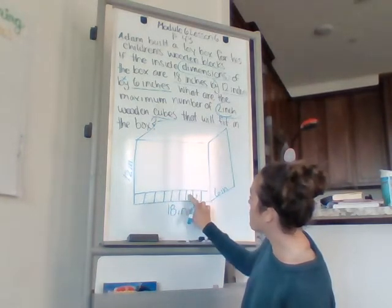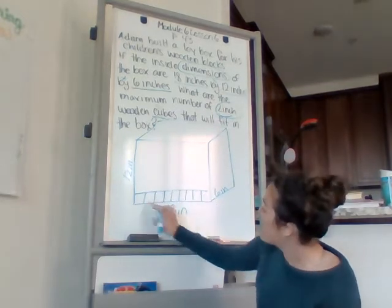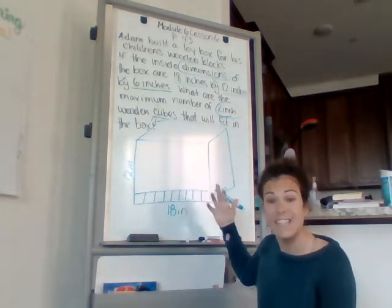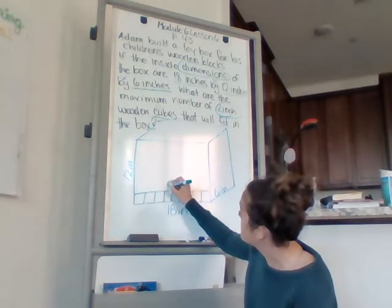2, 4, 6, 8, 10, 12, 14, 16, 18 is how many blocks? 1, 2, 3, 4, 5, 6, 7, 8, 9. 18 divided by 2 is 9 cubes.